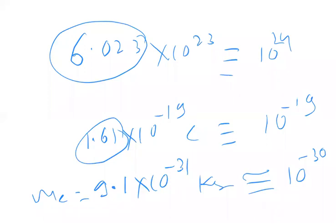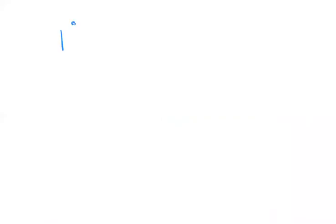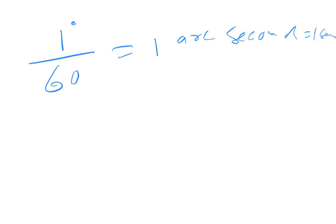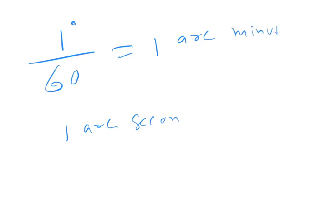That was a brief idea of order of magnitude. Now, arc minute and arc second: one degree divided into 60 parts gives one arc minute — also called one minute. One arc minute divided into 60 parts gives one arc second. So one degree equals 60 arc minutes, and one arc minute equals 60 arc seconds.